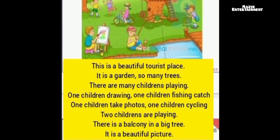This is a beautiful tourist place. It is a garden. There are so many trees. There are many children playing — one child riding, one child fishing, one child taking photos, one child cycling, and two children are playing. There is a balcony in a big tree. It is a beautiful picture.